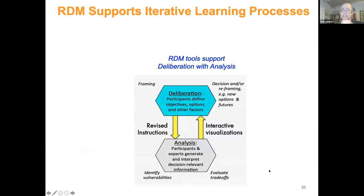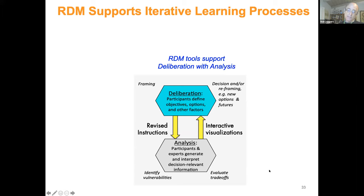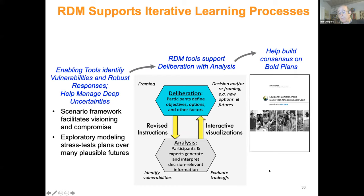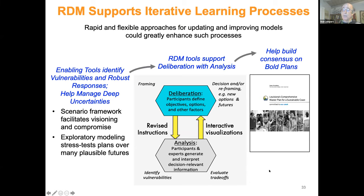RDM supports iterative learning processes. A key one is this idea of deliberation with analysis — an iterative process where you gather stakeholders, they define objectives, options, and other factors. This gives instructions to the model producers who then generate decision-relevant information based on the problem framing. Then you re-deliberate again based on that information, which may change people's objectives, options, and other factors when you iterate. We've embedded these ideas in large stakeholder exercises, which in some cases have been very impactful and successful. The key idea is that rapid and flexible approaches for updating and improving models could be inserted into this deliberation-with-analysis process and could greatly enhance them.